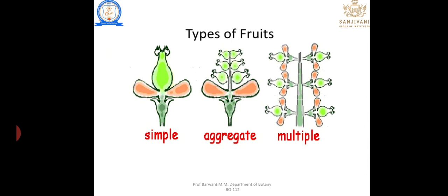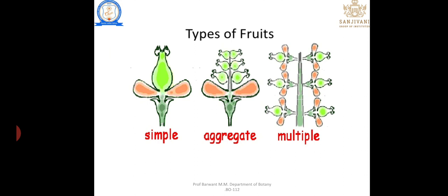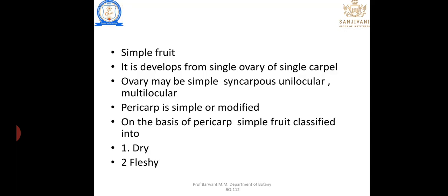Simple fruit: the fruit is developed from a single flower with a single carpel and is known as simple. Aggregate: one flower with many carpels. Multiple: the whole inflorescence is converted into fruit. Simple fruit is developed from a single ovary; the ovary may be simple, syncarpous, unilocular, or multilocular. Based on the nature of pericarp, simple fruits are classified into dry and fleshy.